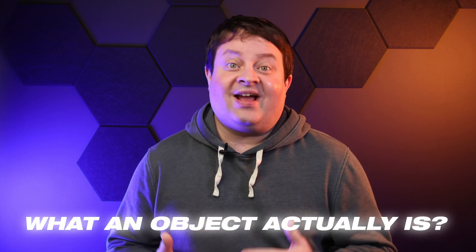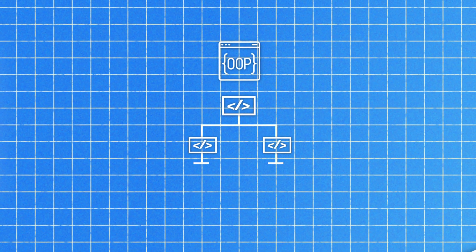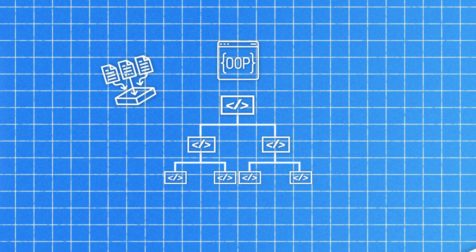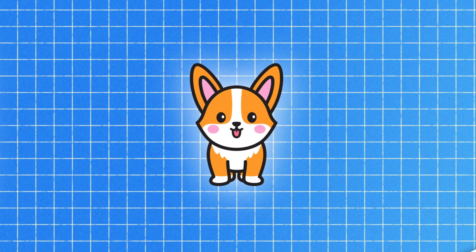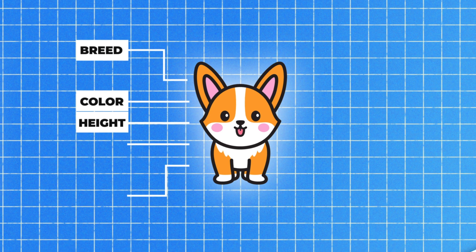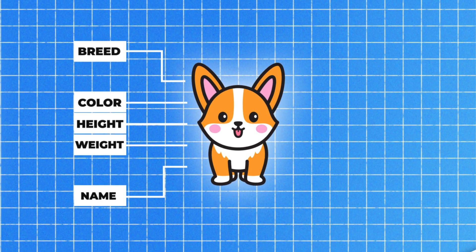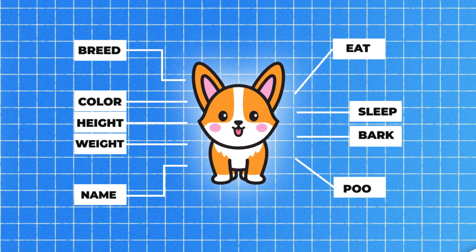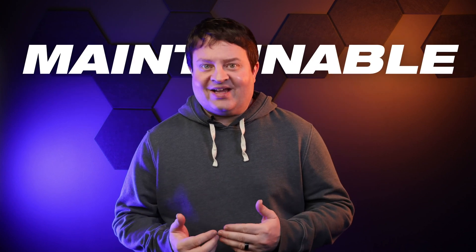Before we jump into the pillars, we should talk about what an object actually is. Objects are just organizational structures for your code — they organize data and behaviors. For example, a dog object might have data like breed, color, height, weight, and name, and it might also have behaviors like eat, sleep, bark, and poo. The whole point of these pillars is to take these objects and design them in a way that makes them reusable, extensible, and more maintainable.